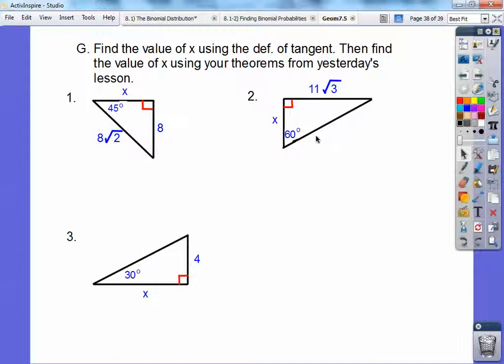Here. This is a 30-60-90 triangle. Whatever that is, the longer leg is root 3 times the shorter leg. So this side must be 11. So this is 11. This would be 22, but it's not asking for that. This is 4. This is 4 root 3.